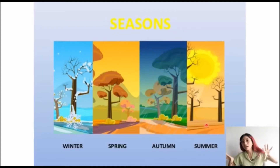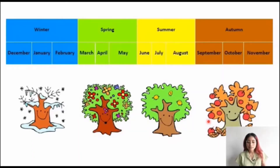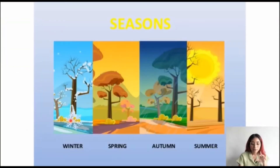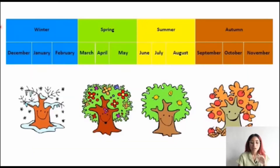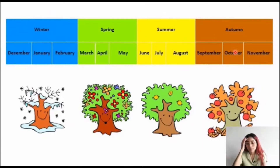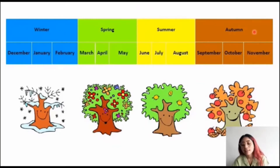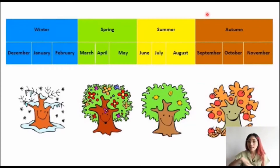Pay attention to the pictures. I'm going to show you a calendar where we can see the seasons of the year. We have winter, spring, summer, and autumn. The correct order is: when autumn is finishing, we start with winter, then spring, then summer, then autumn again — and it happens year after year. So we start with winter, spring, summer, and autumn.